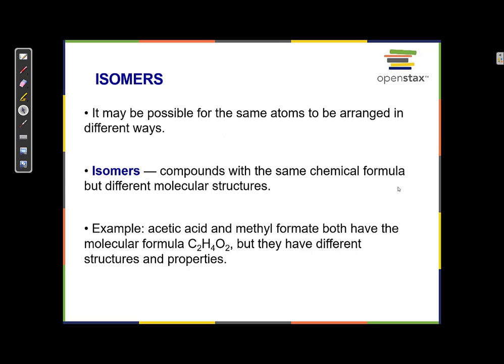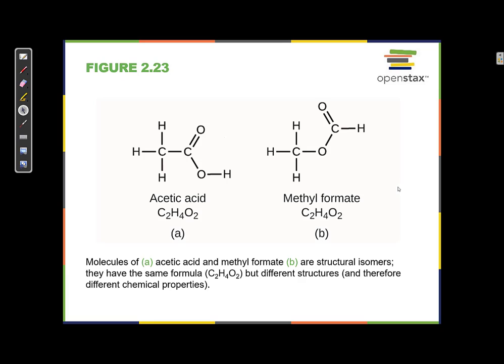It may be possible for the same atoms to be arranged in different ways — these are called isomers. Isomers are compounds with the same chemical formula but different molecular structures. For example, acetic acid and methyl formate both have the same molecular formula — two carbons, four hydrogens, and two oxygens — but they have different shapes and are bonded in different ways. In acetic acid, the two carbons are bonded together; in methyl formate, the carbon atoms are separated by an oxygen. So they are different compounds with different structures.